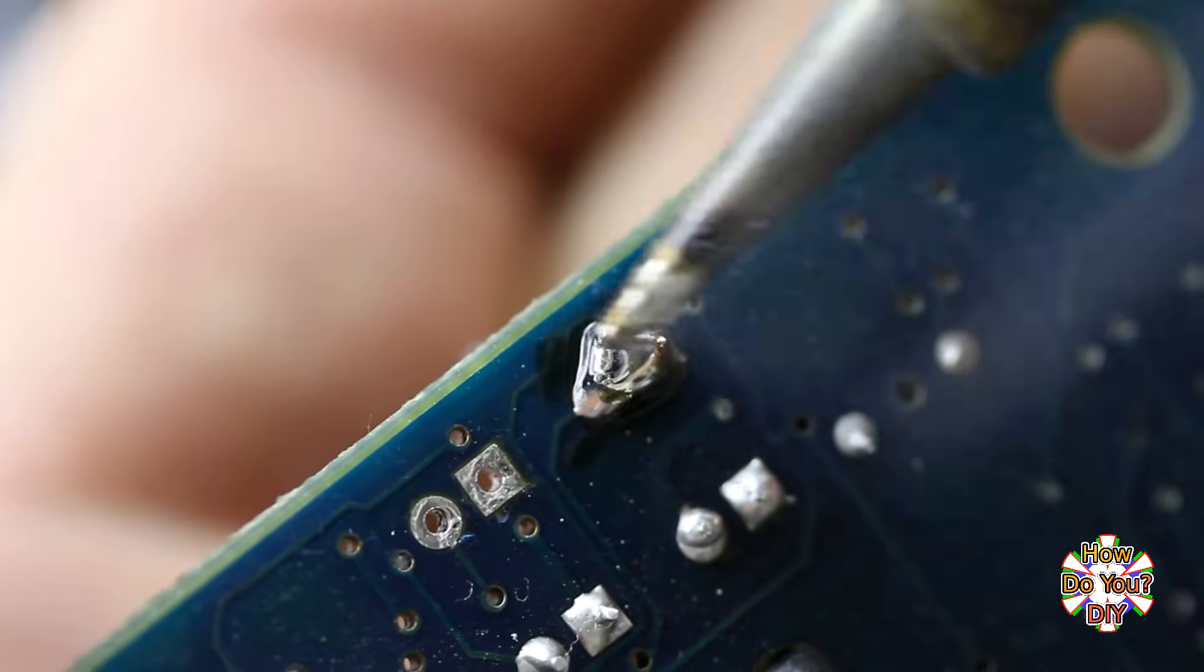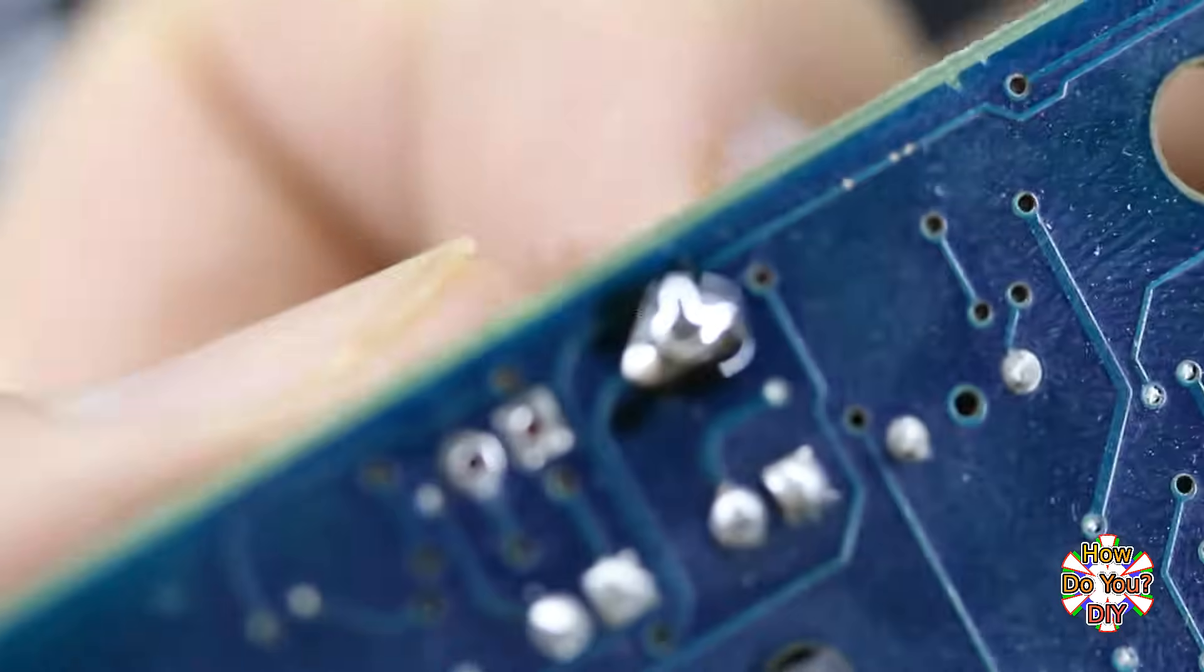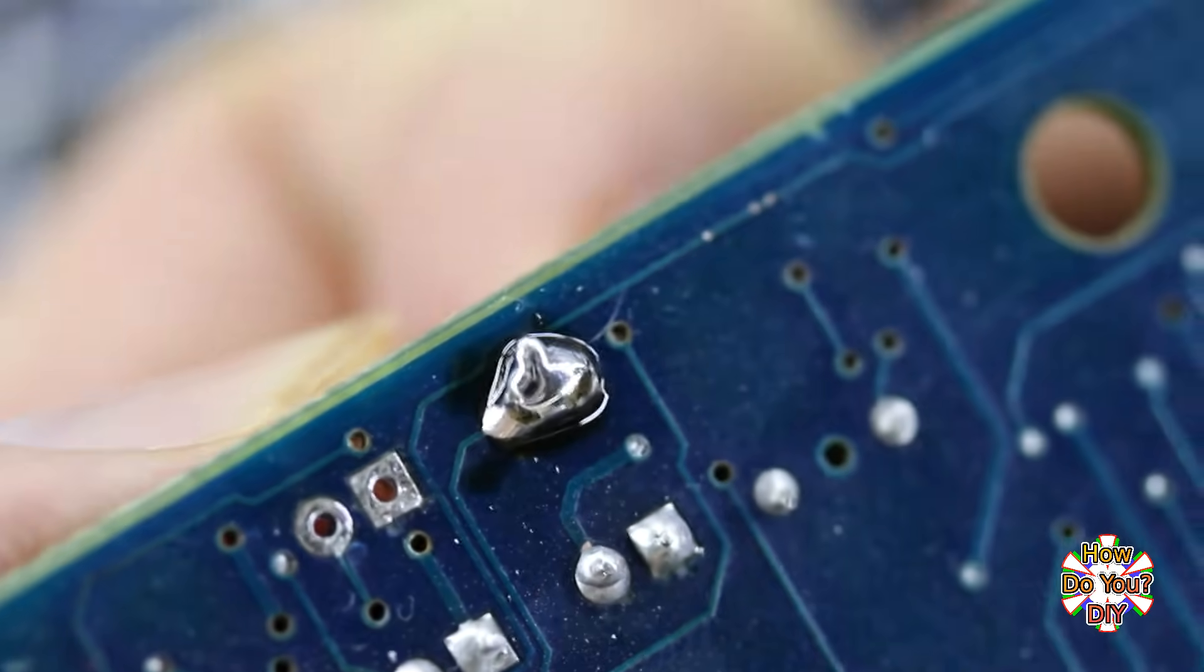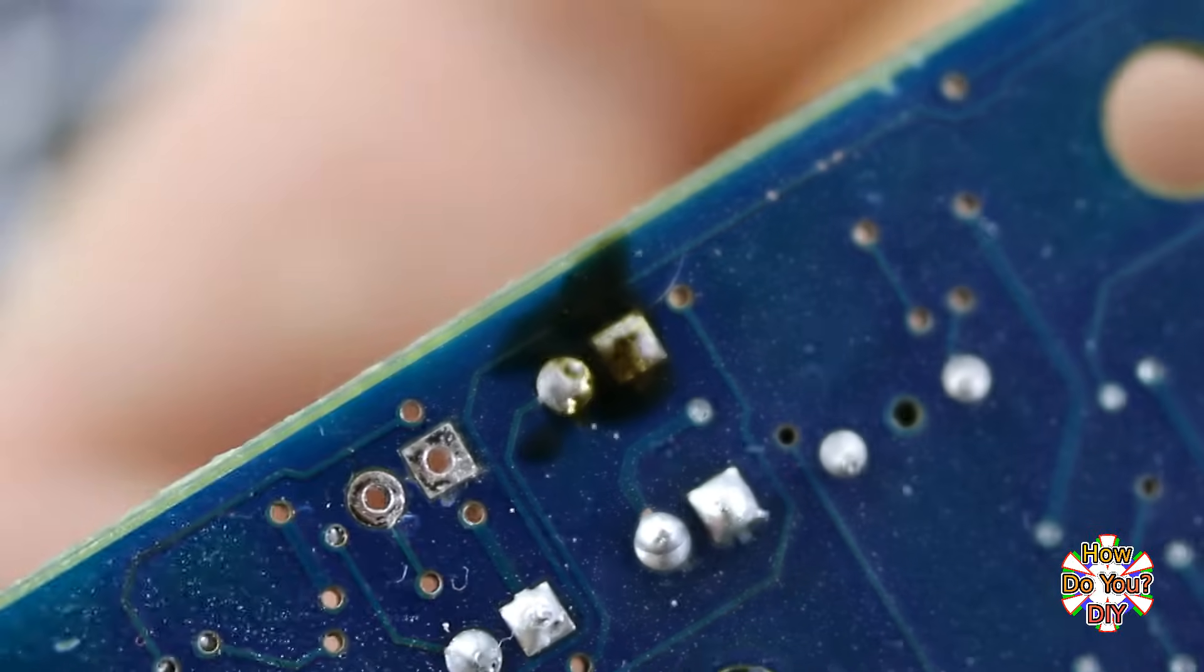Now when you melt the solder, it will melt on both of the leads at the same time, and it will be easy to pull the part out. You may still need to remove some of the remaining solder from the holes, but you can use the methods that I've already described to do that.